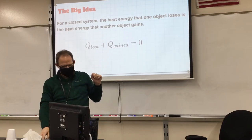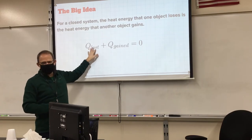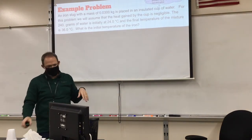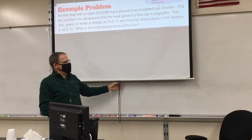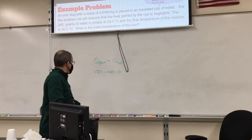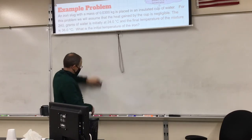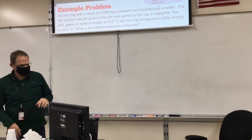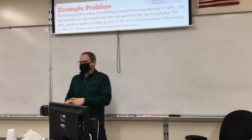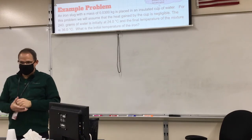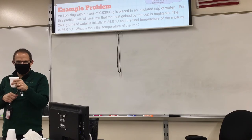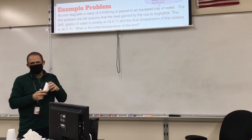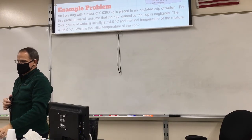The details are how to find Q using mc delta T, but the big idea is that all energy changes in a system add up to zero. So this is our first homework problem — I'm going to solve it as an example, but since it's your homework with the same numbers, you can solve it with me and have the first problem done. This is problem set 7.3, question number one.